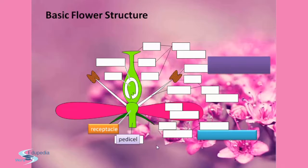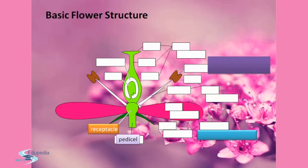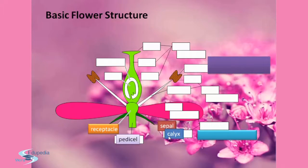This is the typical representation of a flower. As we know, flower is the reproductive unit in the angiosperms, which means it is meant for sexual reproduction. This is the pedicel. This swollen part is the receptacle. This green part is the sepal, and the group of sepals makes the calyx.